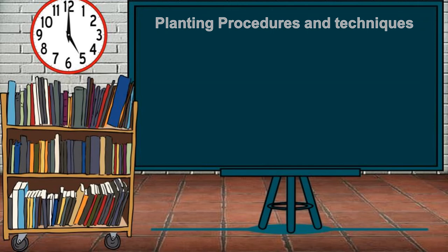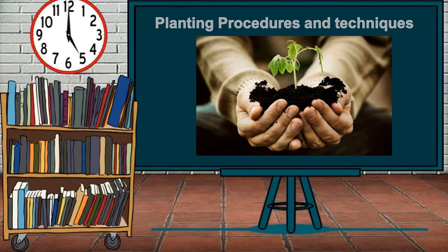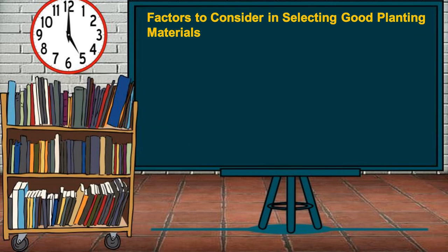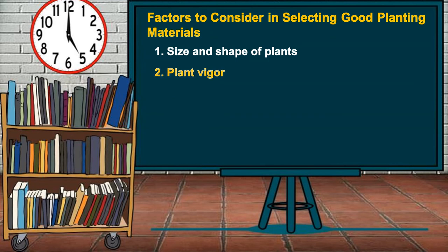Selection of planting materials and proper land preparation ensure good quality yields. Factors to consider when selecting planting materials include: size and shape of plants — choose good-sized trees that will produce good quality fruits; plant vigor — healthy seedlings must be selected; variety — choose varieties that are high quality and adapted to the soil and climatic conditions of the place; and early fruiting, which provides satisfaction and early return of investment.